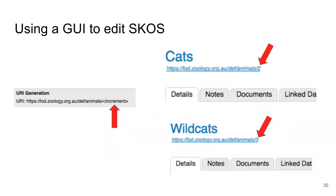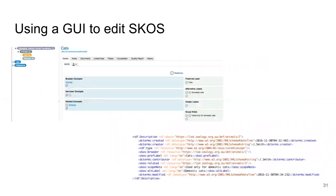I can easily define a URI pattern and the software will implement this pattern as each concept is defined. In this example, I have a base URI and then each concept is individually identified by addition of a running number — Pool Party generates these numbers. I don't have to be concerned about SKOS syntax; I can define concept labels, set relationships between concepts and document concepts, and the editing software creates the underlying SKOS.